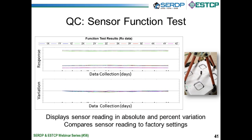The sensor function test is a straightforward test to document that the EMI sensor is working as designed. It involves putting an industry-standard object on the sensor and measuring the response across all received channels. These tests are performed at the start and end of each day and at two-hour intervals throughout the day. The sensor function test data are compared to previous measurements and to reference files provided by equipment manufacturers. If unreasonable changes are observed, the integrity of the data is suspect. If systematic changes are observed, a root cause investigation is initiated and we don't move forward until it's fixed.